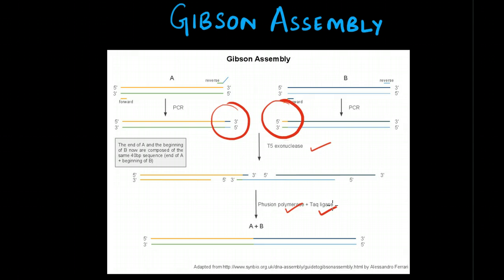What happens at first is that the exonuclease starts chewing each of these DNA fragments from the 5' to the 3' end, this way, on the DNA fragment A, and the 5' end to the 3' end on DNA fragment B.